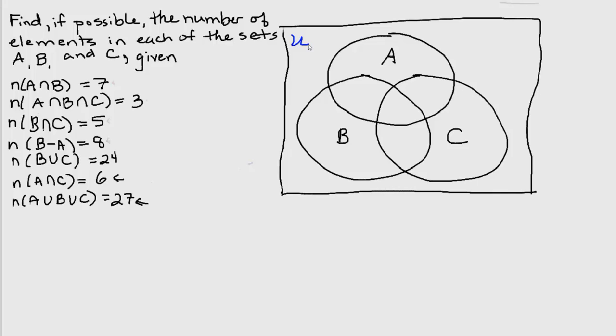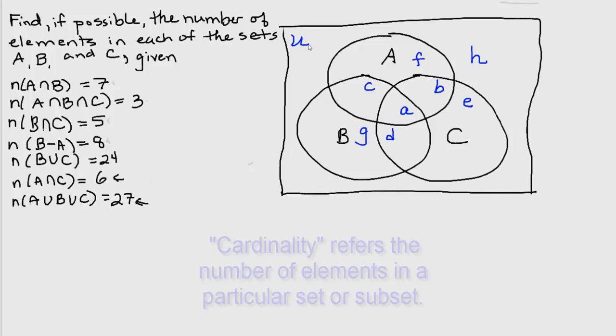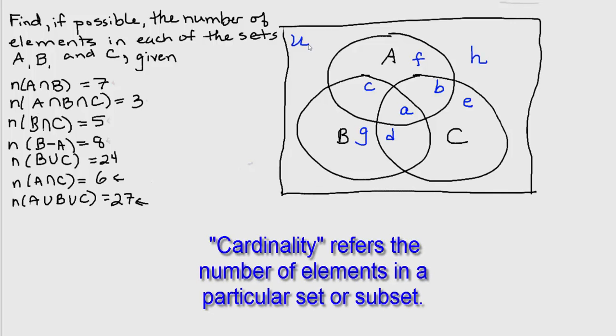I'm going to label these so we can talk about them. I'm going to label the center lowercase a, then lowercase b, lowercase c, lowercase d, lowercase e, f, g, and h. I'm not going to use numbers to label these regions because I don't want to confuse the numbers with our cardinalities, which means the number of elements in each of the regions.